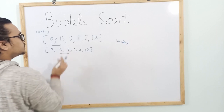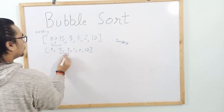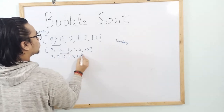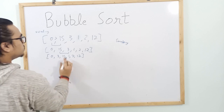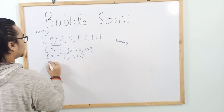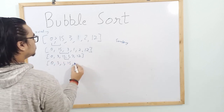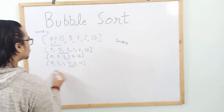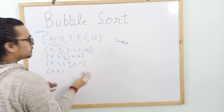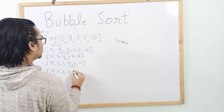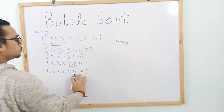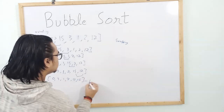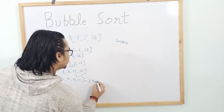For example, comparing 15 and 3: since 15 is larger than 3, the values are swapped, giving us 0, 3, 15, 1, 2, and 12. Then 15 is compared to 1 — since 15 is greater, values are swapped again. Then 15 is compared to 2, and finally to 12. At the end of the first iteration, the largest number, 15, is pushed to the end of the list.